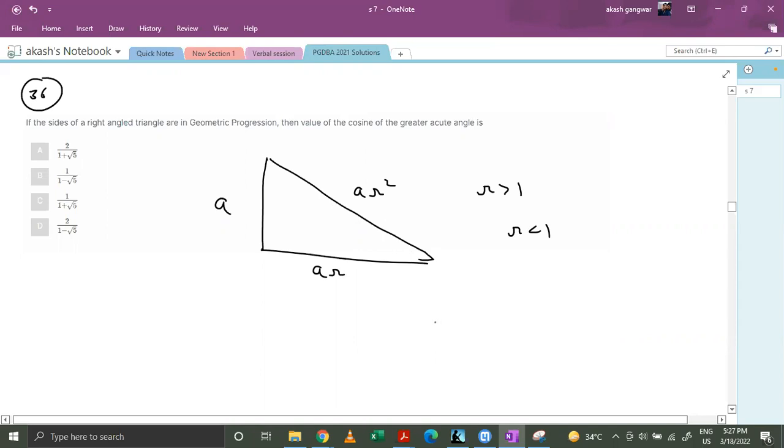Now, we know that for right angle triangle, A squared plus A square R square which basically makes it R raised to the power 4 minus R square minus 1 equals to 0.